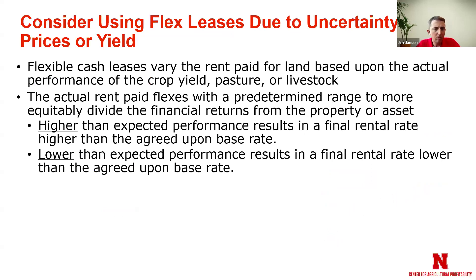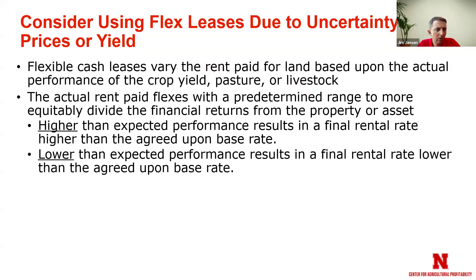How do we deal with uncertainty — with respect to commodity prices, a wet spring, or a really dry summer? One thing we can do when we're not certain about different things — the most classic example being lower commodity prices — is to look at adjusting the cash rent using what we call a flexible cash lease. You can use flexible cash leases based on actual performance or price for the crop yield, how much rain the pasture got, or even what price you sold the calves for.